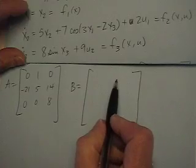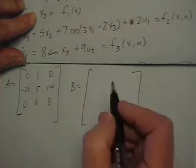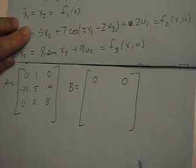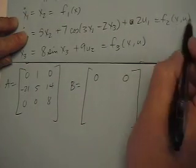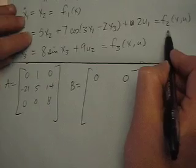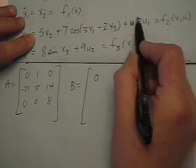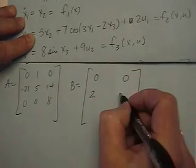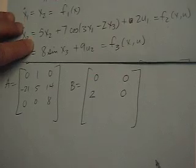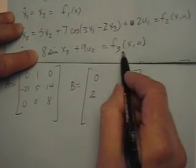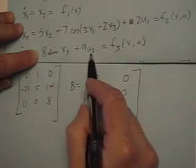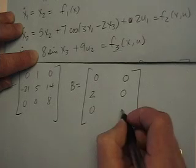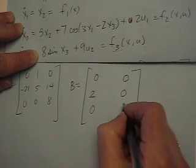Now building the B matrix. The first row is the partial of f1 with respect to u1 and u2 — there's no u in that equation, so both entries are zero. The second row: partial of f2 with respect to u1 gives 2, and partial with respect to u2 gives 0 since there's no u2. The third row: partial of f3 with respect to u1 is zero, and partial with respect to u2 from the 9u2 term gives 9.